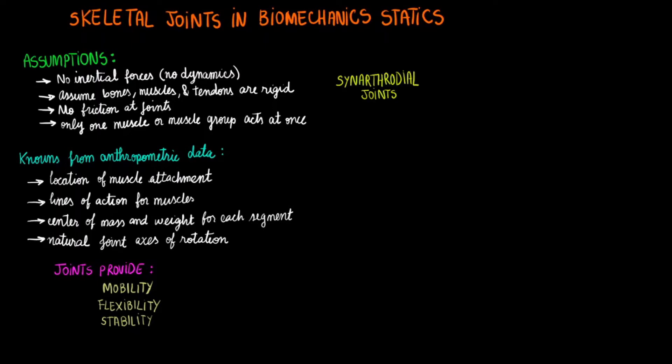The first type of joint is the synarthroidal joint. One example of such a joint is the skull. As you can imagine, these joints are very tight-fitting and will not allow for movement at all.